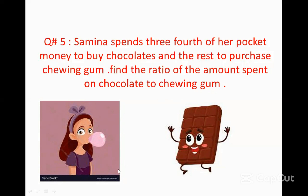As you can see in this picture, that girl is eating Twingham and she has made a balloon of Twingham. Samina spent three-fourths of her pocket money to buy chocolate and the rest to buy Twingham. So there are total four parts of her pocket money — three parts she spent on buying chocolate and one part she spent on buying Twingham.